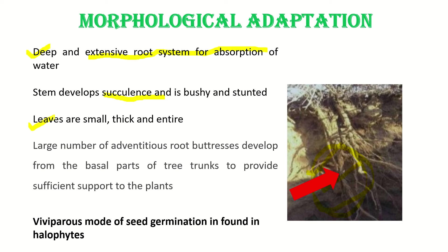Then coming to buttress roots — these are support-giving roots. A large number of adventitious roots are found that develop at the basal part of the tree trunks, providing good support to the plants. These are buttress roots.